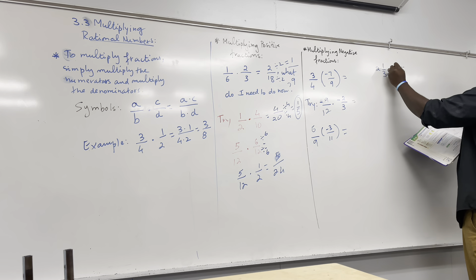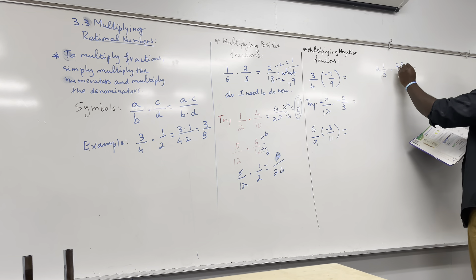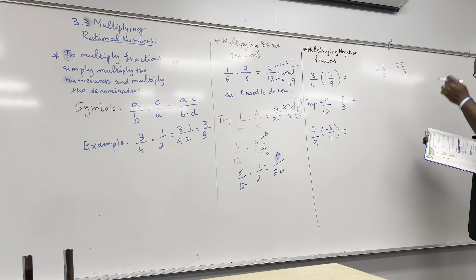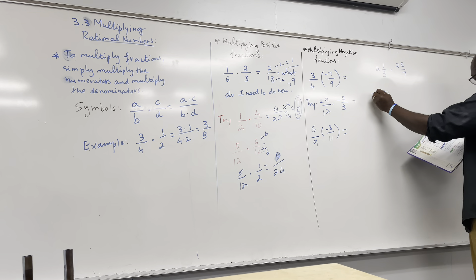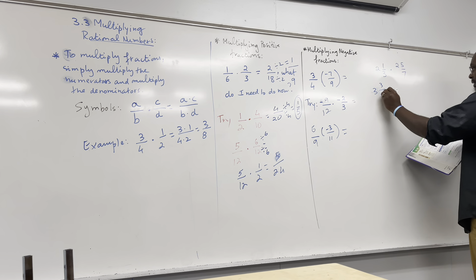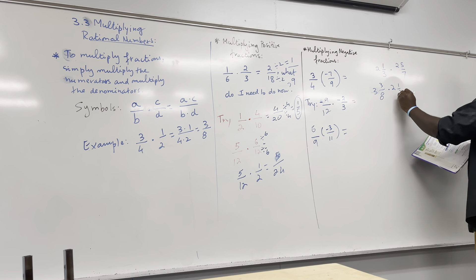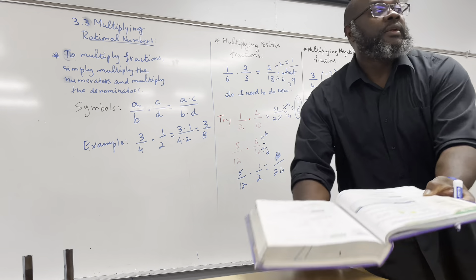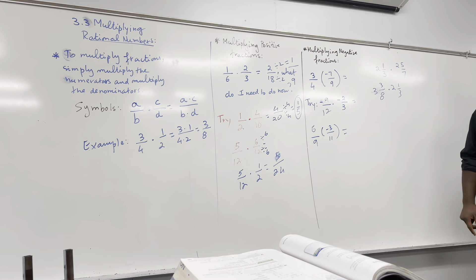Can you simplify six over nine first? Yes — three goes into six and three goes into nine, so six over nine becomes two over three. Now you have two over three times negative three over 11. Two times negative three is negative six, and three times 11 is 33. So you get negative six over 33. What goes into six and 33? Three. Divide by three — you get negative two over 11.